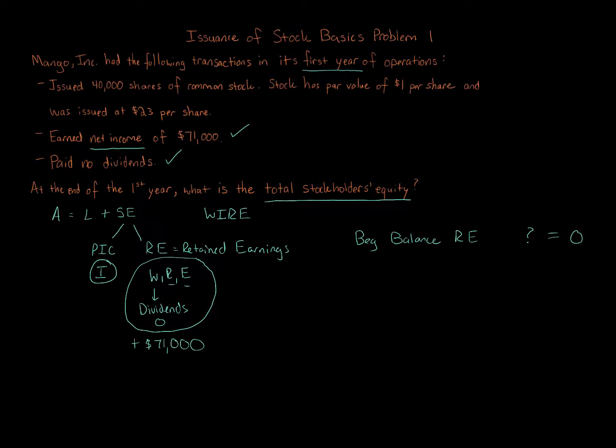On the balance sheet, on the stockholders' equity side, you always start with paid-in capital first. Paid-in capital is the investments—when you issue stock, whether common or preferred. Every corporation must have common stock. You can have preferred stock, but only if you also have common stock. Preferred stock has preference over common regarding liquidation, dividends, etc., with various benefits and trade-offs.